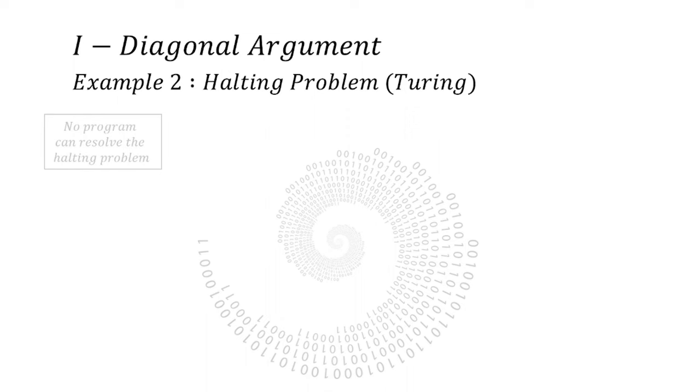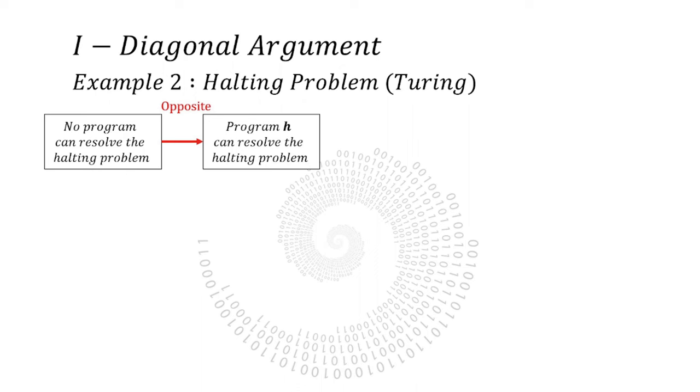The theorem states that in any programming language or Turing machine, there doesn't exist a special program that takes a program and its arguments and tells if the program stops or runs forever. So let's try to prove this. We proceed again by contradiction. So we assume there exists such a program that resolves the halting problem. Let's call it H.